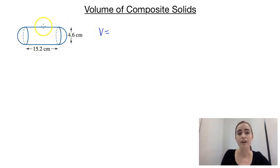So the volume of a cylinder is going to be pi times the radius squared. Now the radius here, we're told that the diameter is 4.6 so the radius would be half of that so it would be 2.3. So we're going to have pi times 2.3 squared and then we need to times that by the height of the cylinder which would be our 15.2.